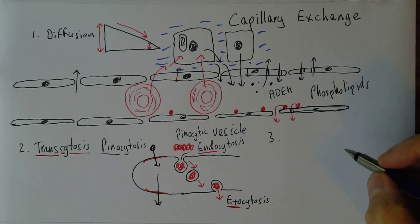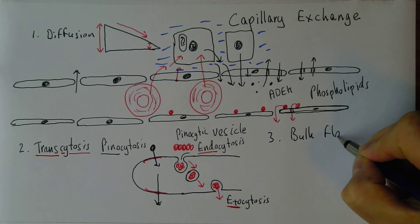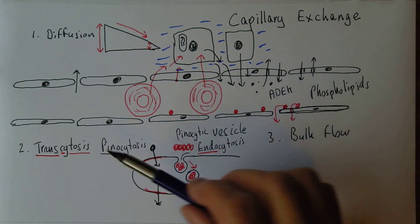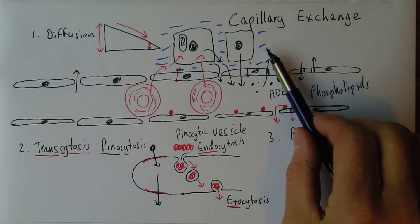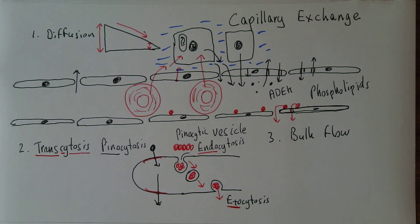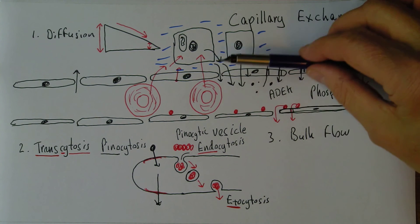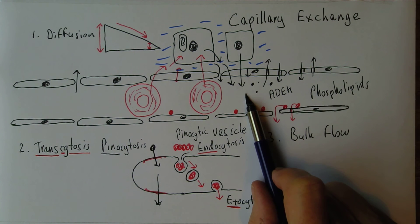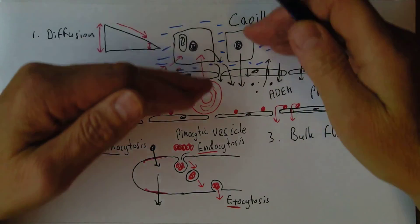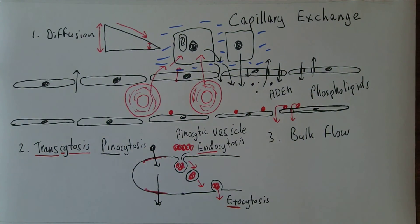The third mechanism is called bulk flow. Bulk flow is necessary to control the movement of ions, different molecules, and particles in a fluid. This is what regulates the relative volumes of fluid in the intravascular compartment — in the blood — and in the interstitial compartment between the cells. We need this regulation of the concentration of proteins and the amounts of water — we don't want the blood to become fluid overloaded and the interstitial fluid to become dehydrated. We need this balance, and it is facilitated by bulk flow.